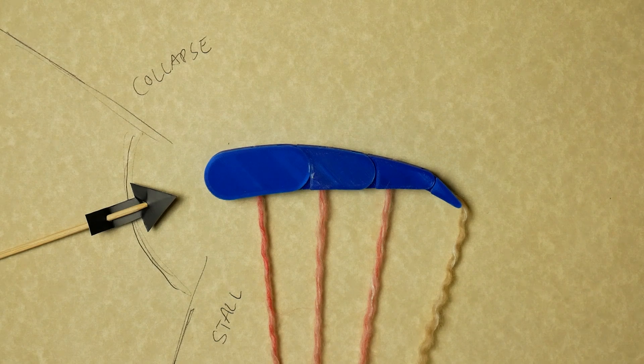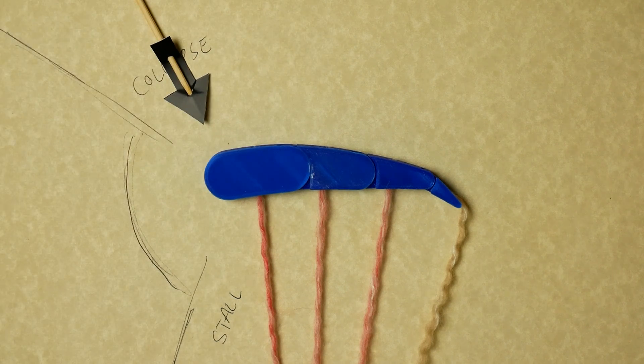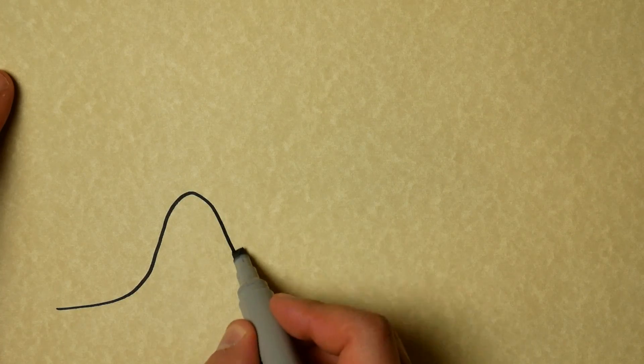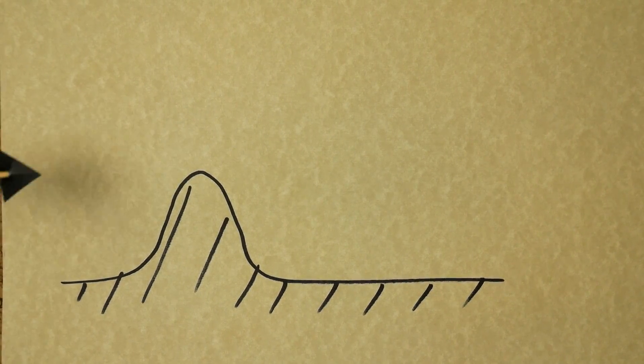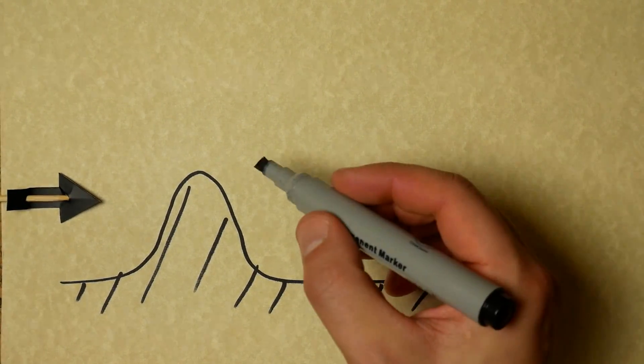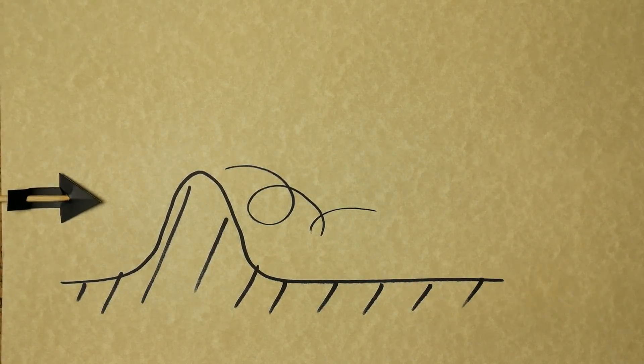So what's interesting to me in trying to make an uncollapsable paraglider is what happens when we are here. Let's look at an example situation in which we could have airflow coming from the top.